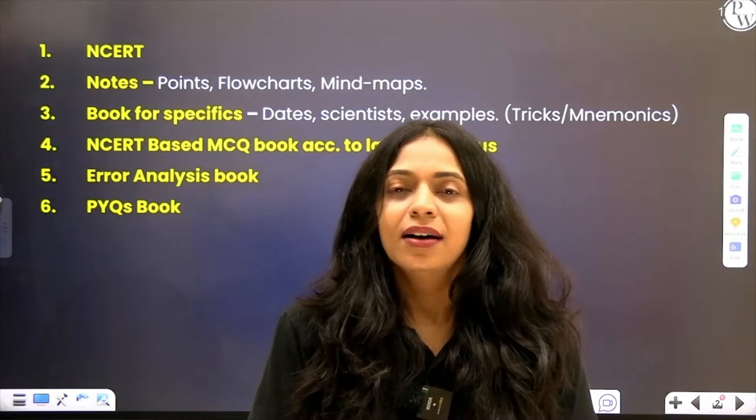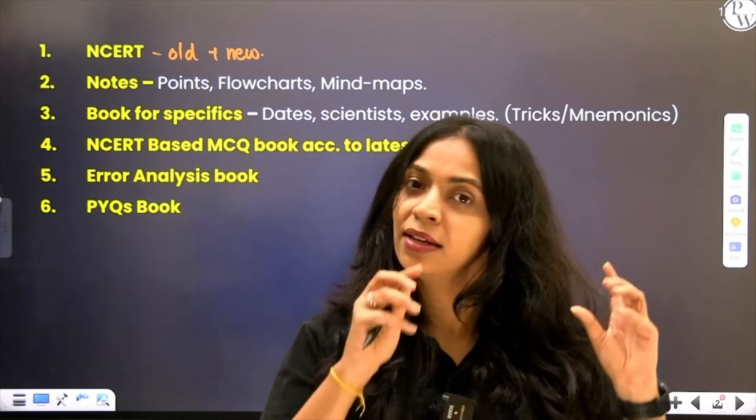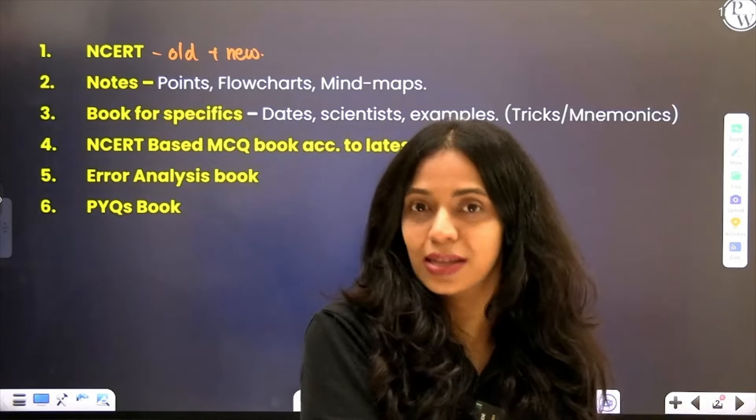The first book — I'm sure everybody already knows — is the NCERT textbook. Everybody knows that most of the questions in biology, including both botany and zoology, are directly statements from NCERT. Everybody knows how important it is, but there is one confusion I commonly see in students: which NCERT textbook to refer — is it the old one or the new one?